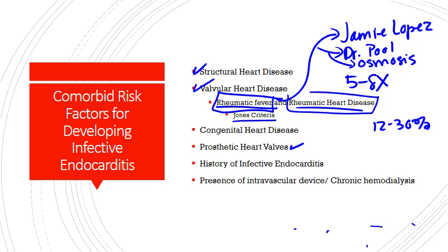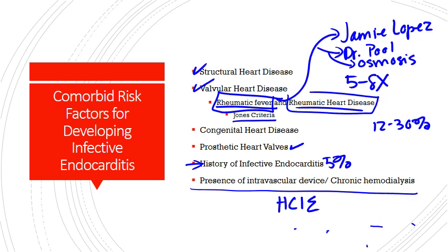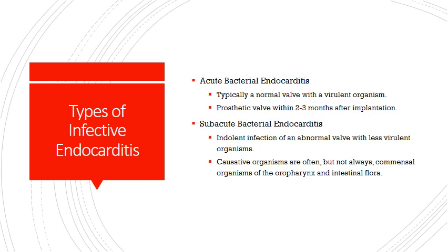If you've had infective endocarditis before, that's actually considered a comorbid risk factor — any patient who has previously had it is automatically placed in a higher risk category. Recurrent IE occurs in about 5% of patients, so it's pretty important. The presence of an intravascular device and chronic hemodialysis is also a comorbid risk factor. Bacteria associated with intravenous catheters or invasive intravascular procedures are causes of healthcare-associated infective endocarditis.